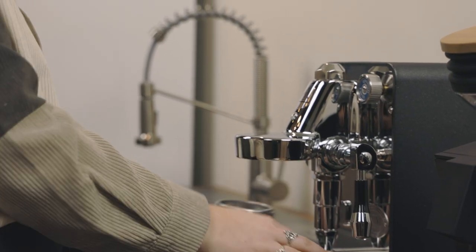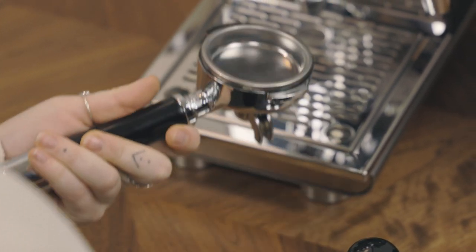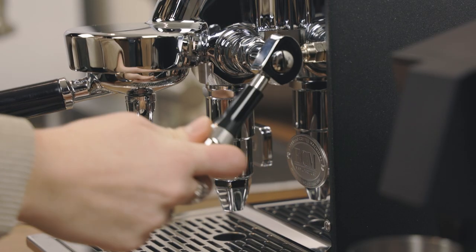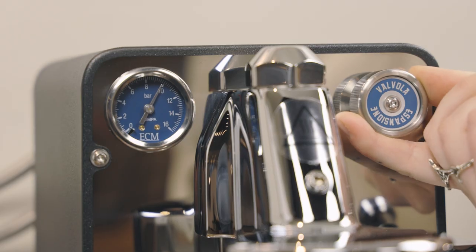To adjust the brewing pressure, place the portafilter with the blind basket into the group head. Lift the brew lever to engage the pump. Move the knob clockwise to raise the pressure and counterclockwise to lower it.